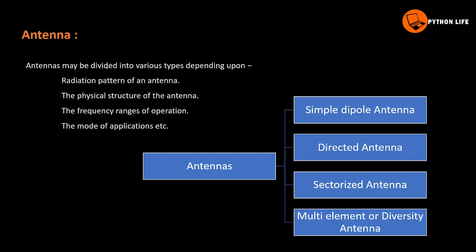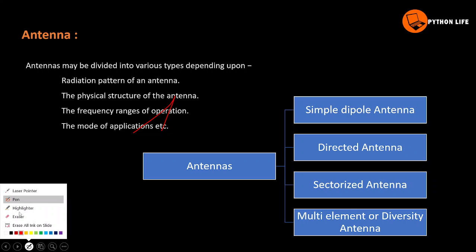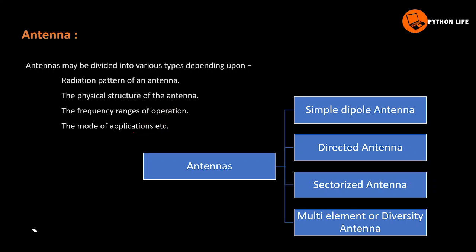The antenna may be divided into various types depending upon: the radiation pattern of an antenna, the physical structure of an antenna, the frequency ranges of operation, and the mode of applications.